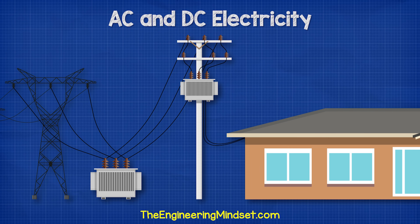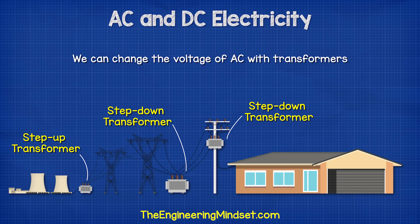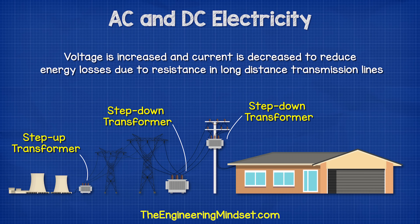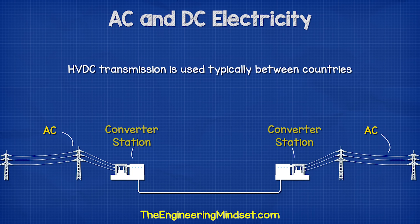In most cases we transport electricity from a power station to towns and cities using AC electricity, because it's easy to increase and decrease the voltage using transformers, and it's also very efficient to transport electricity over long distances using this method. However, there are a few high voltage DC transmission lines being used, but we won't go into too much detail on those.